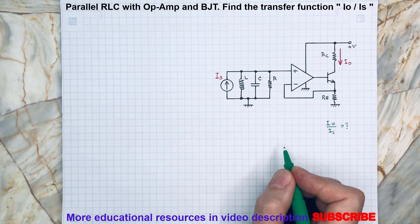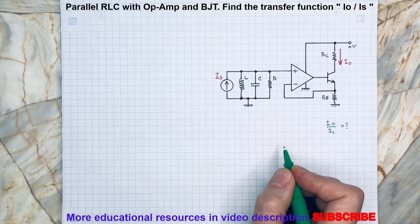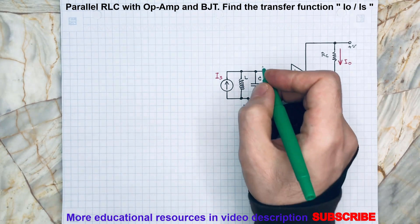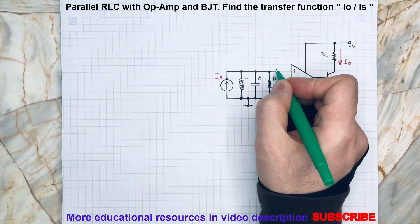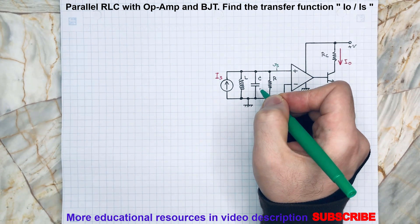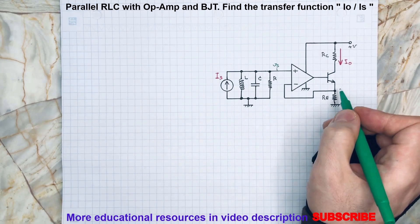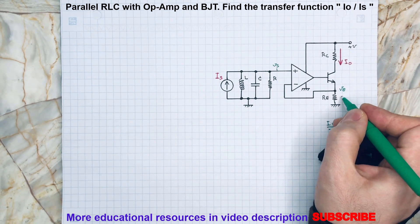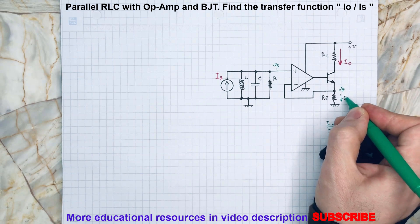As you may already notice, this is a parallel RLC circuit connected to an op-amp and BJT transistor. Before we start, let's call here VS, here VE, and this current IE.